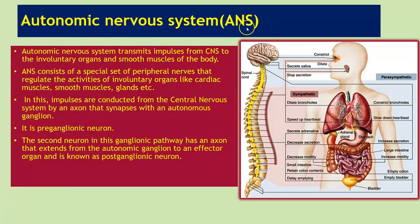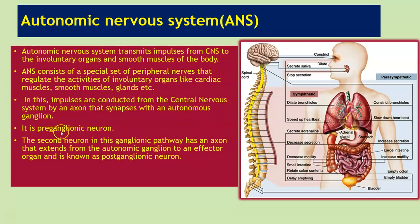The autonomic nervous system (ANS) transmits impulses from your central nervous system to the involuntary organs and the smooth muscles of your body, controlling our involuntary body movements. ANS consists of special sets of peripheral nerves that regulate the activities of involuntary organs like cardiac muscles, smooth muscles, glands, etc. Impulses are conducted from the CNS by an axon that synapses with an autonomic ganglion — this is the preganglionic neuron. The second neuron has an axon extending from the autonomic ganglion to an effector organ and is known as the postganglionic neuron.